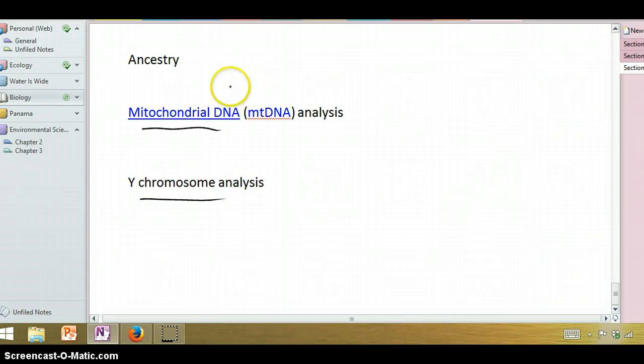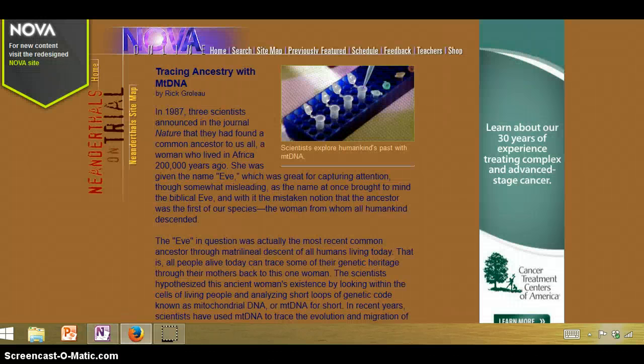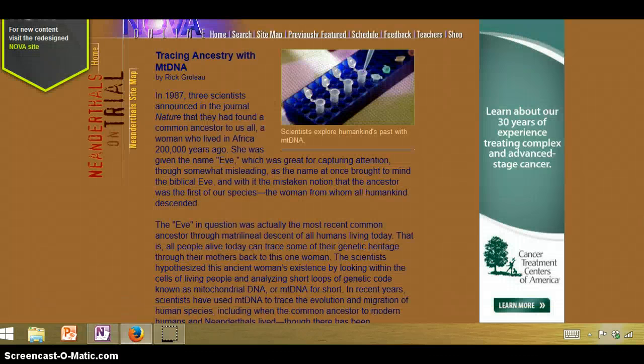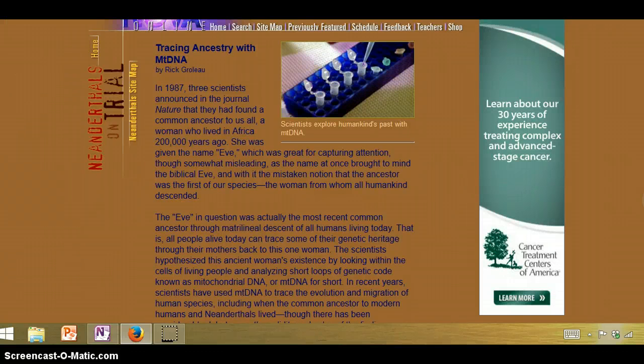A common way to do this is to use mitochondrial DNA or the Y chromosome. We do this because you get your mitochondrial DNA from your mom and boys get the Y chromosome from their dad. Obviously, you can't use Y chromosome to study ancestry in females, just in males. But you can use mitochondrial DNA for everyone because we all have mitochondrial DNA, but we get it from our mom. If we go to this website here, tracing ancestry with mitochondrial DNA.